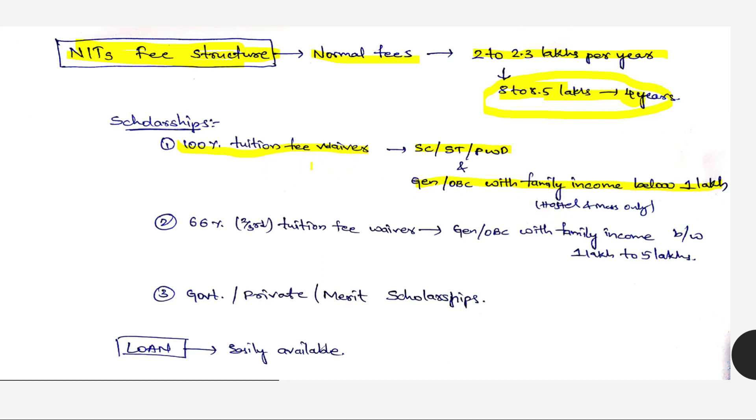66%, which is 2/3 of tuition fee, will be waived if you are general and OBC student with family income between 1 to 5 lakhs, below 5 lakhs and above 1 lakh. Government and private merit scholarships will also be there in NITs.